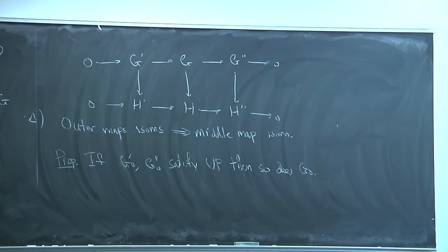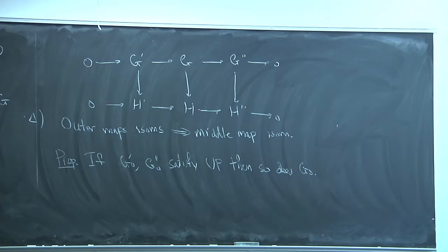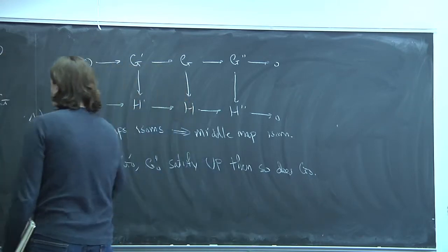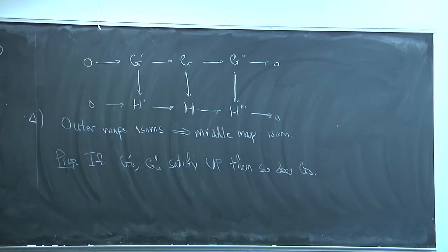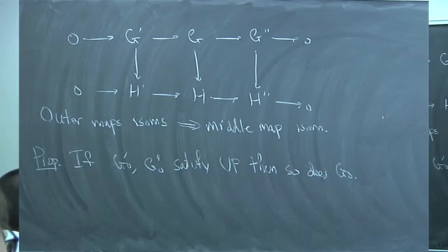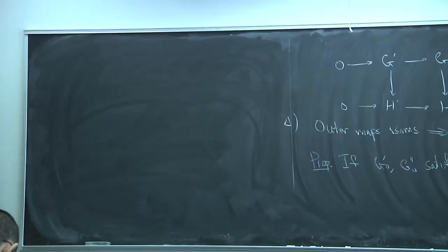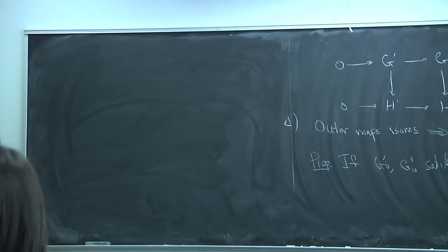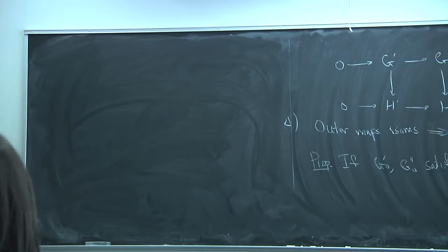Take G to be the maximal prolongation of G₀ and H to be the minimal one. G' may not be the maximal one for G₀', but it is a prolongation, so you have a map between two prolongations of G₀' that satisfies UP. That handles it. To understand simple group schemes: if you have a simple object, its endomorphism ring is a division algebra, and you can think of the object as a module over that ring.